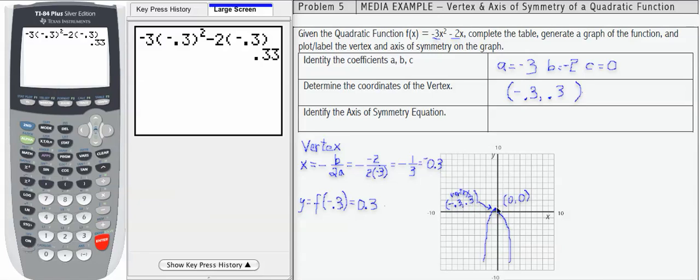And the vertex in this case, because the parabola opens down, that's the highest point on the parabola. So there are no other points higher than the vertex.